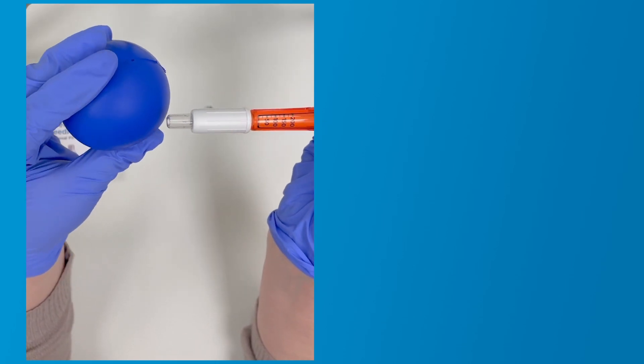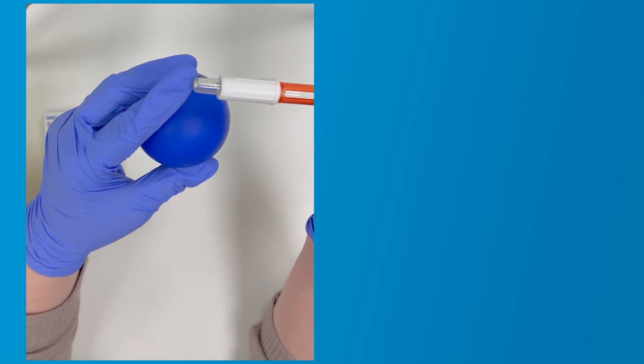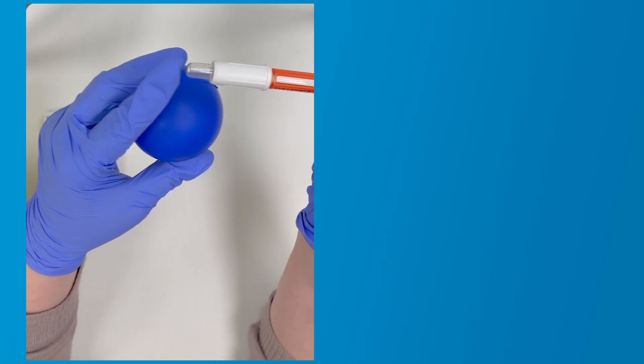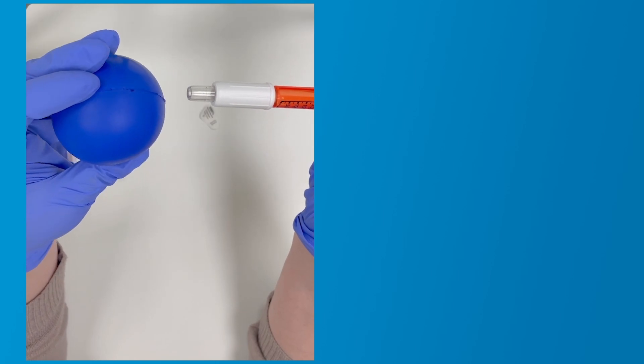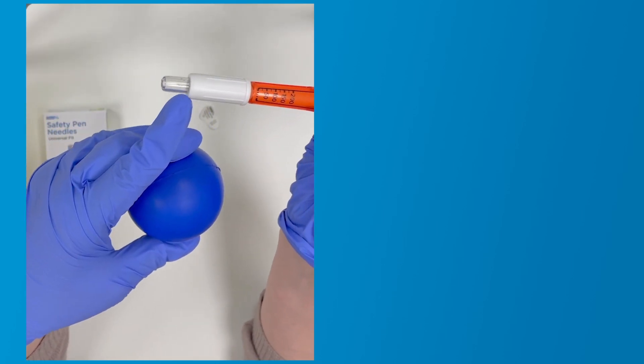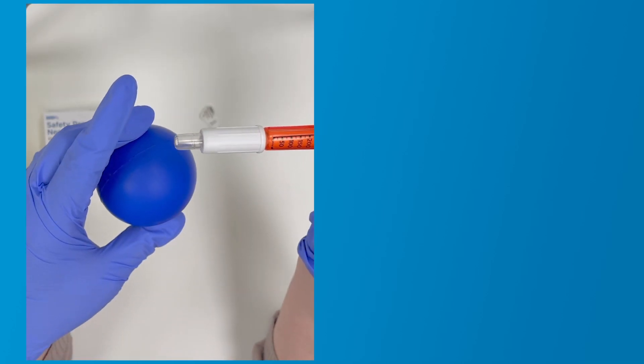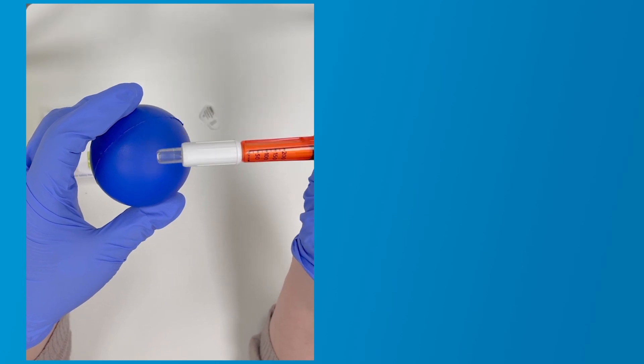On lifting the insulin pen away from the skin, the clear shield should automatically deploy and lock in place. The inner yellow or blue cylinder will no longer be visible as the needle has been activated. This is a useful check to determine the needle has penetrated the skin surface and administered the dose of insulin.